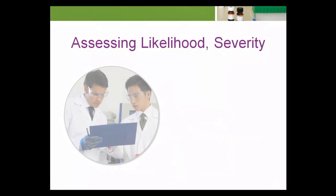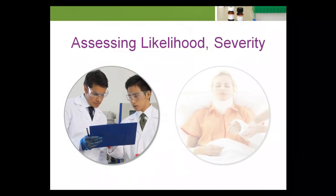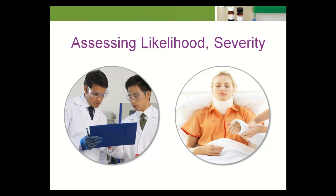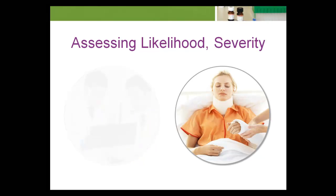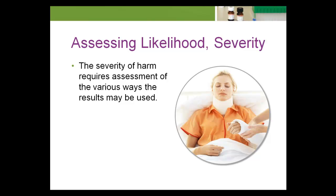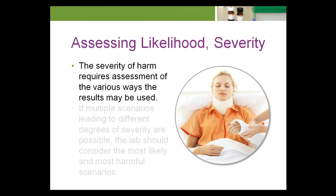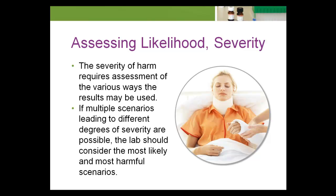Even though the lab has little control over the probabilities leading to patient harm after an incorrect result is reported, the lab should make its best attempt at estimating these probabilities based on the analyte, patient population, and medical judgment. Likewise, the severity of harm to a patient resulting from an incorrect lab result will depend on the analyte and the patient population. The severity of harm requires assessment of the various ways the results may be used, and the lab should consider the most likely and most harmful scenarios.